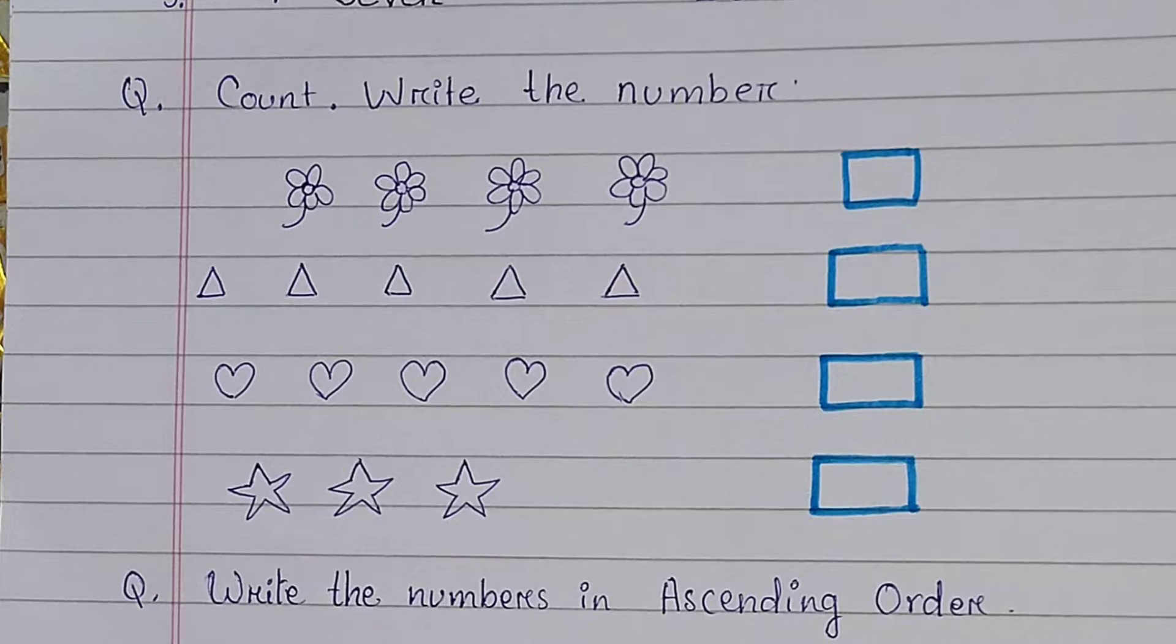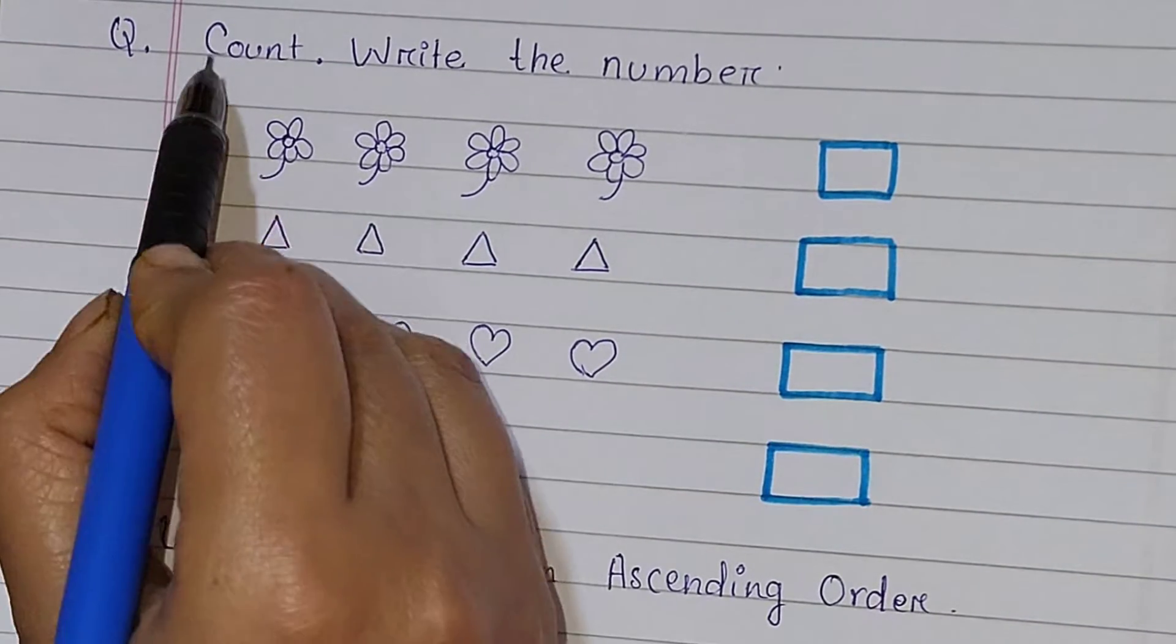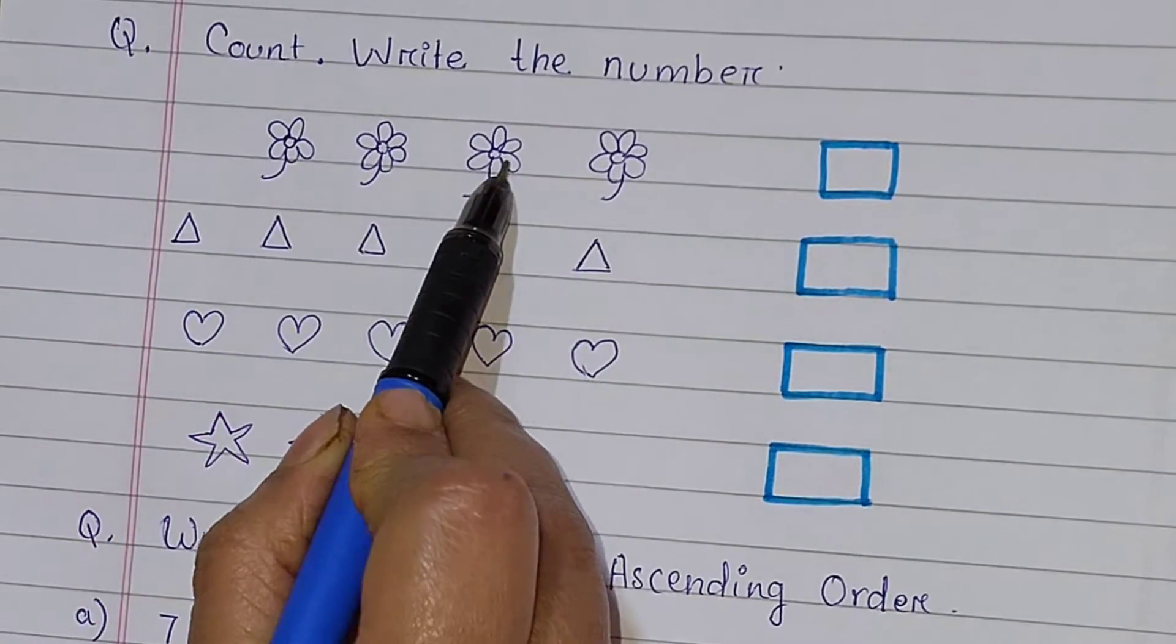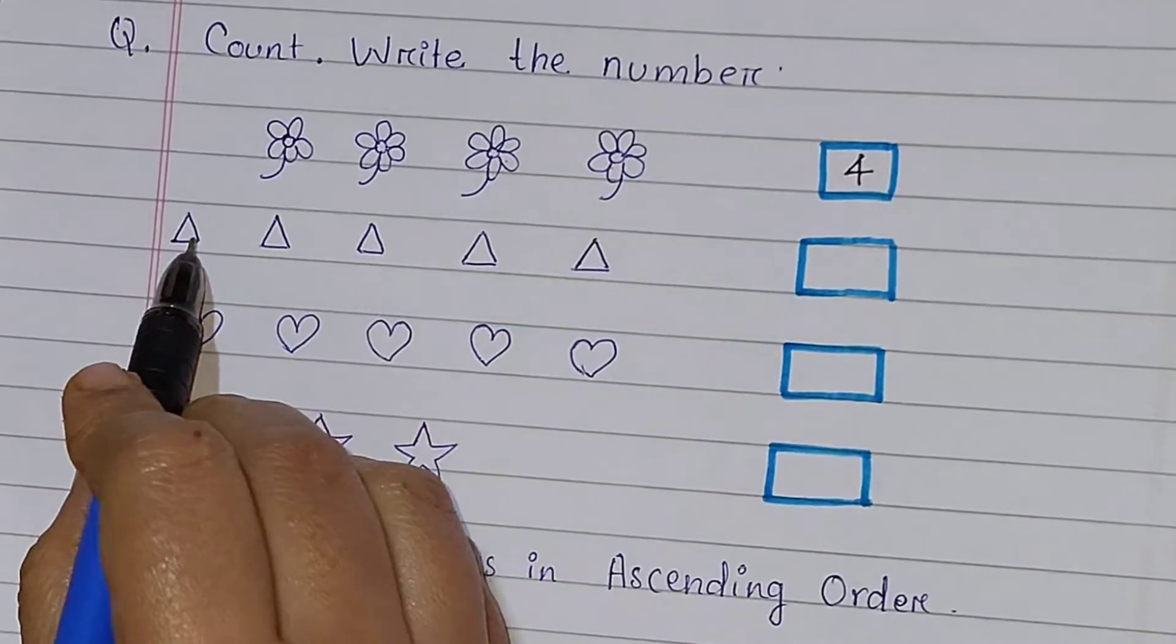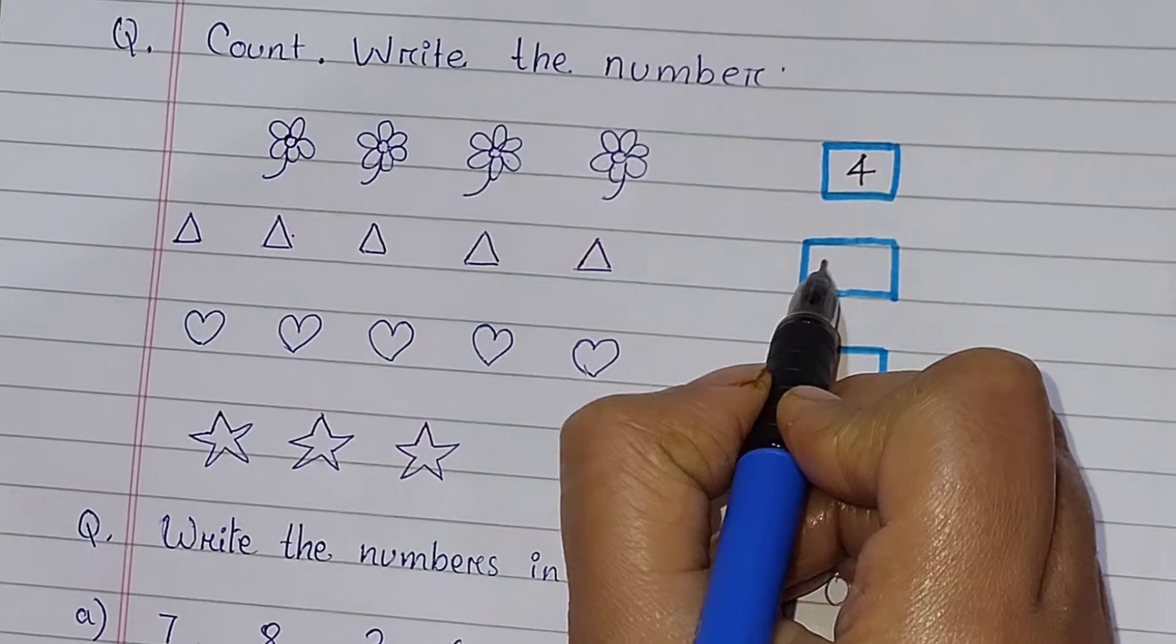Next question is count and write the numbers. First, count the object. 1, 2, 3, and 4. 4 flowers. Next, 1, 2, 3, 4, 5. 5 triangles.